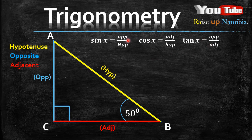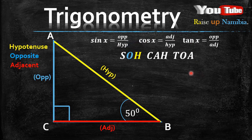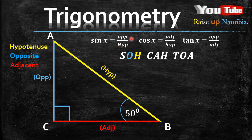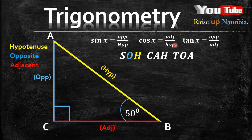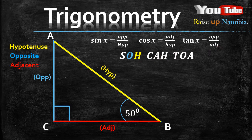Now you need these ratios to be able to calculate questions that relate to such triangles, but you don't have to memorize the ratios. All you need to memorize is this word: SOHCAHTOA. The SOH represents S for sine, O for opposite, H for hypotenuse. The CAH: C is for cosine, A for adjacent, H for hypotenuse. In the TOA: T is for tangent, O is for opposite, and A is for adjacent. I'll show you how to use SOHCAHTOA in just a minute.